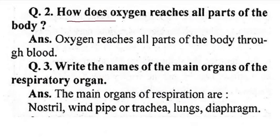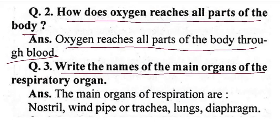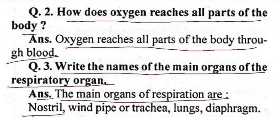How does oxygen reach all parts of the body? Oxygen reaches all parts of the body through the blood. Now, write the names of the main organs of the respiratory system: nostril, windpipe, trachea, lung, and diaphragm.